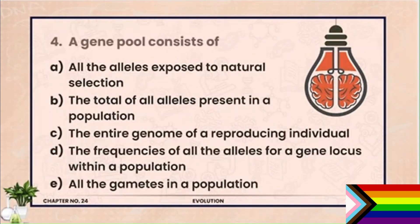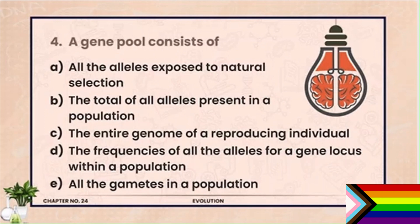MCQ 4. A gene pool consists of — options include: (A) all the alleles exposed to natural selection, (B) the total of all alleles present in a population, (C) the entire genome of a reproducing individual, (D) the frequencies of alleles for a gene locus within a population, (E) all the gametes in a population. The correct answer is (B): the total of all alleles present in a population. Ek population ke under jitni bhi alleles maujood hoti hain, woh gene pool kahlati hai.